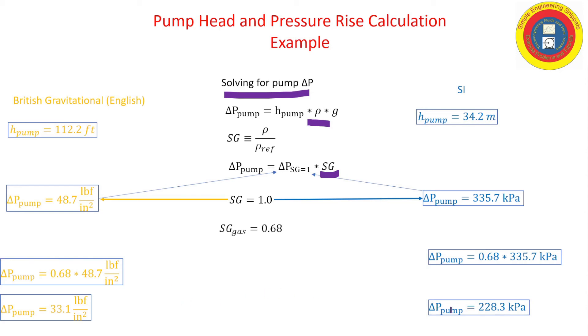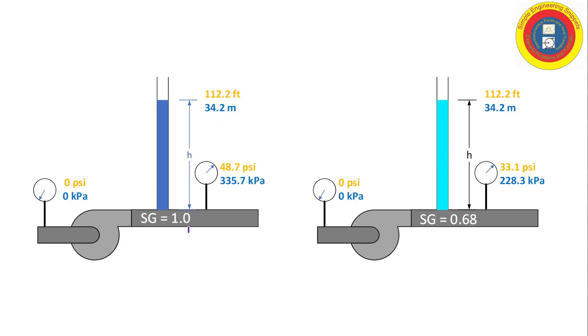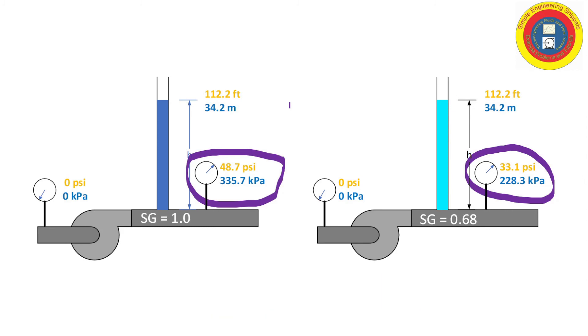So again, I want to reiterate that the head remains the same when we change specific gravity, but it is the discharge pressure or the pressure rise across the pump that is actually going to change. This is why pump manufacturers will specify their performance curves in terms of head. Typically, it's in head energy per weight; it could be energy per mass with dimensions of feet squared per second squared. Typically, it's energy per weight in units of feet or meters.